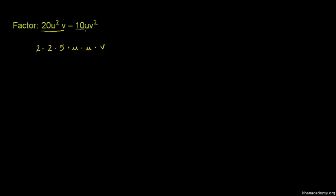Now looking at the second term, 10uv squared. We break it down: 10 is 2 times 5, then we have u, and v squared is v times v.